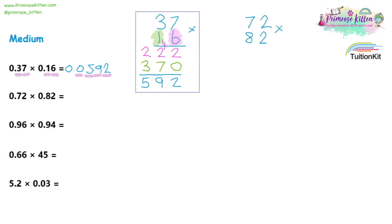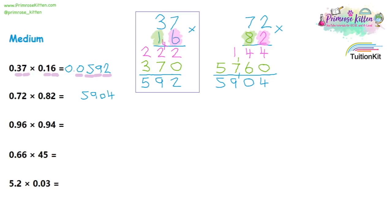Moving on to 0.72 times 0.82: we start by doing 72 times 82. Two times 72 gives us 144. Then 80 times 72: 80 times two is 160, and working through the rest gives us 5760. Adding those together gives us 5904. Looking back at the question, we have four decimal places in total, so the decimal point moves four places to the left, giving us an answer of 0.5904.